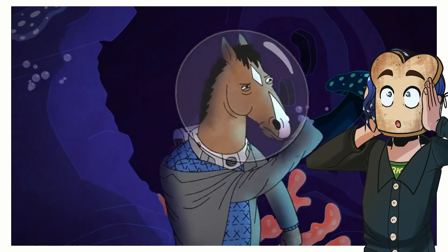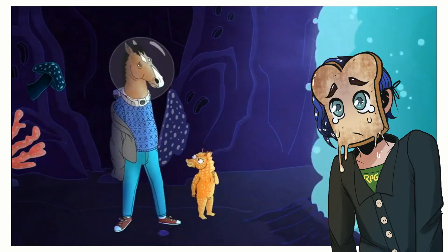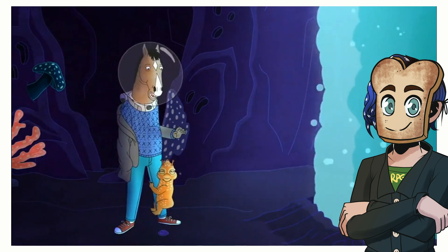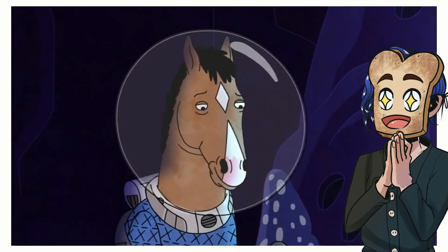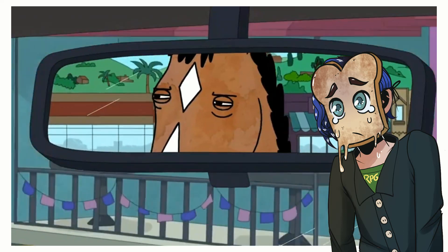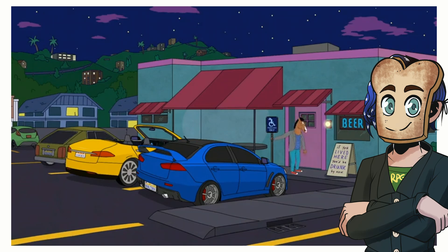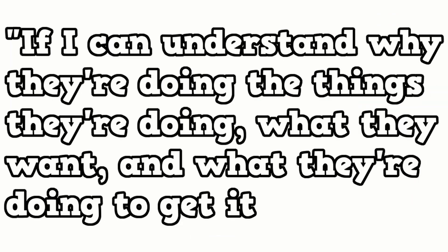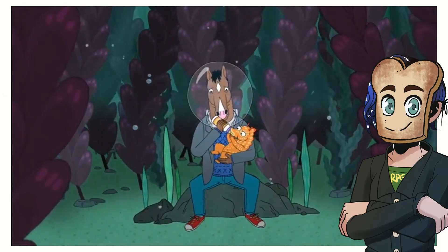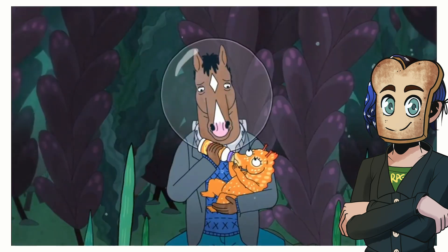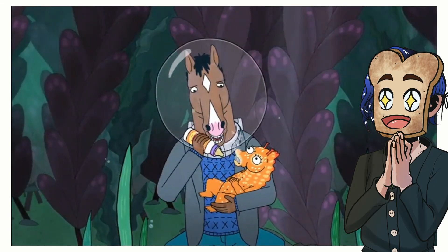Don't over-focus on giving your characters a whole bunch of traits, as traits tend to be superficial, but make sure there is at least one redeemable thing about them, as this will make the character more interesting. Bojack Horseman is a very, very flawed character who makes many mistakes, but as Raphael Bob-Waksberg, creator of the show, says: if I can understand why they're doing the things they're doing, what they want, and what they're doing to get it, that's what makes a character likable to me. A character should feel understandable in their vulnerabilities. Bojack is redeemable in that you understand why he does the things he does, and on top of that, he has moments of being caring and insightful.